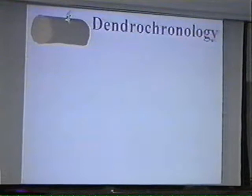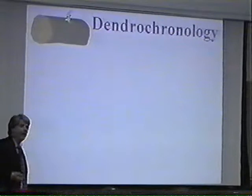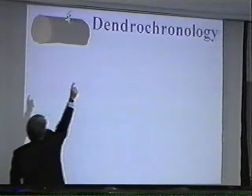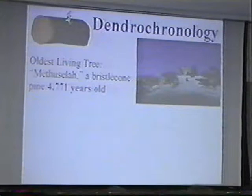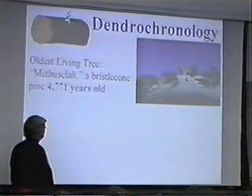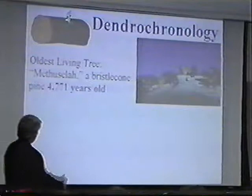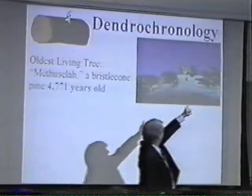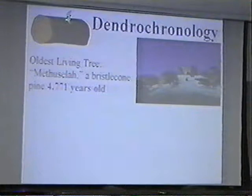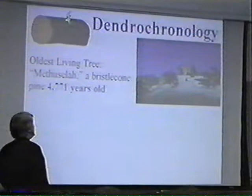One of the more reliable dating methods — though not very applicable — is dendrochronology, the term for tree ring dating. If you cut a tree down and look at a cross section, you'll see that the tree grows in rings, and in general these rings are made once a year. So if you count the number of rings, you can count how old the tree is. If you do that to a bunch of living trees, the oldest tree you can find using this method is 4,771 years old — a type of tree called a bristlecone pine. The oldest one you can find using dendrochronology is just under 5,000 years old.